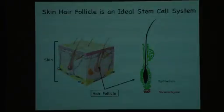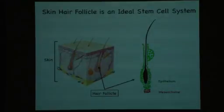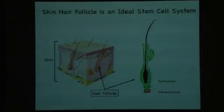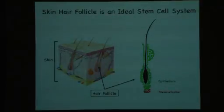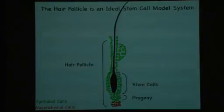Up here is the epidermis, which is what you touch when you touch your skin. Down below, in the dermis, the hair follicle is embedded. Hair follicles are made by two different cell types. What you are seeing here is a schematic of a hair follicle. If you imagine cutting transversally through your skin, you will see epithelial cells depicted in green that together with mesenchymal cells in red constitute the hair follicle. The interaction between these two components regulates regeneration.